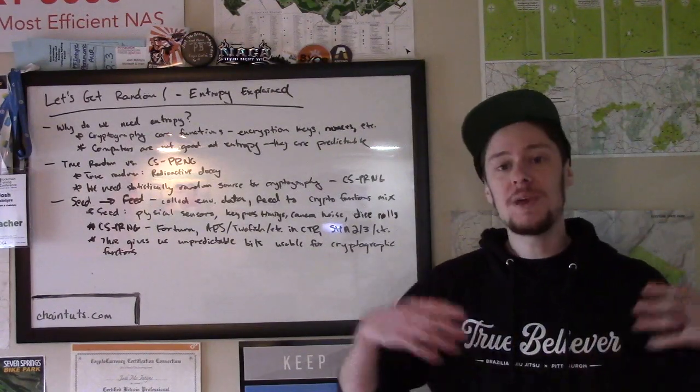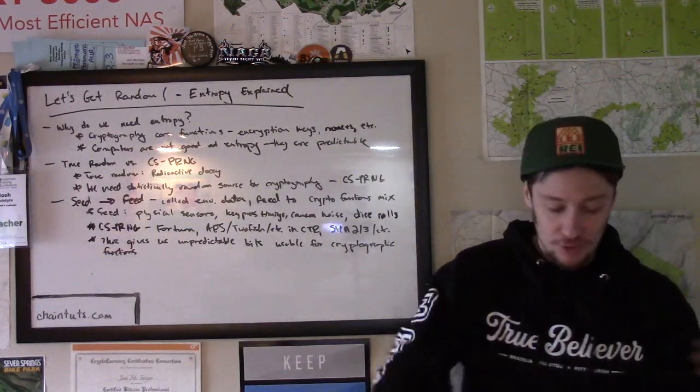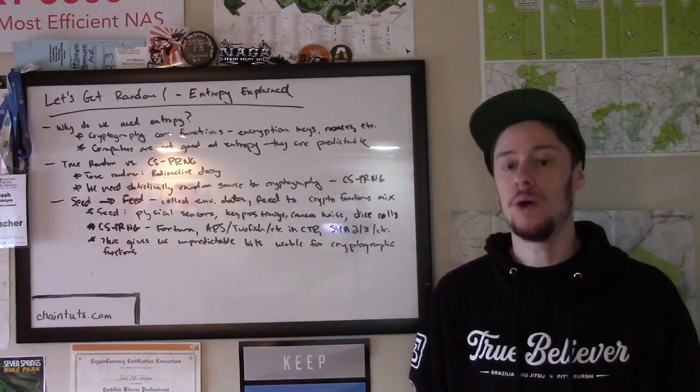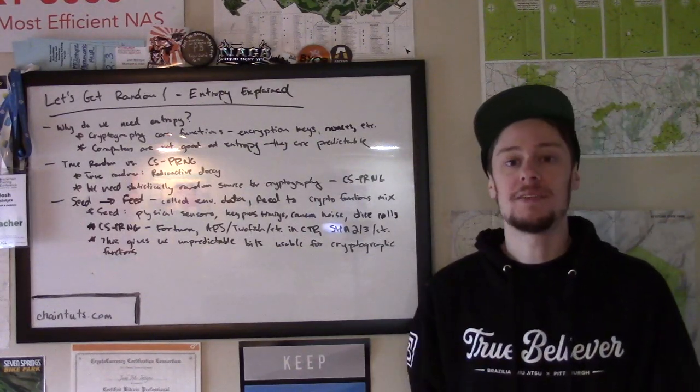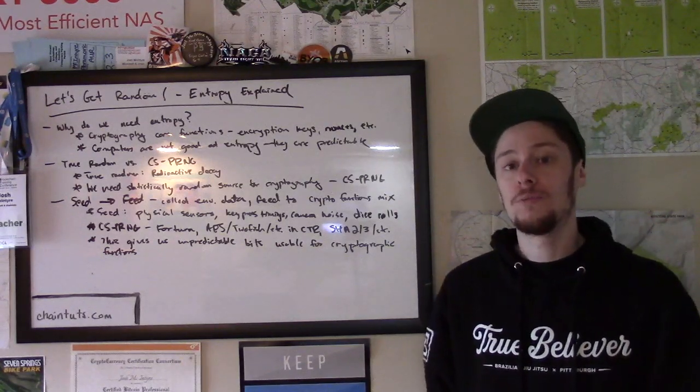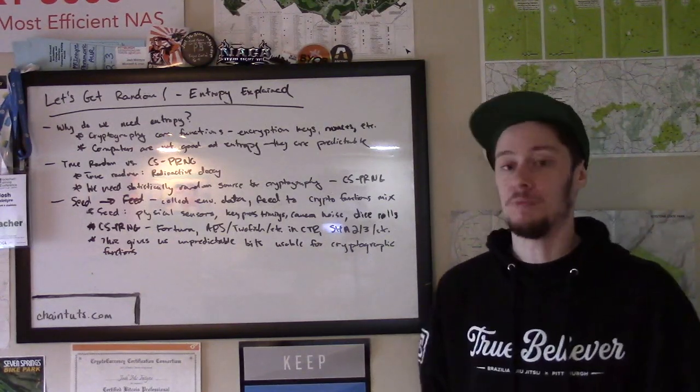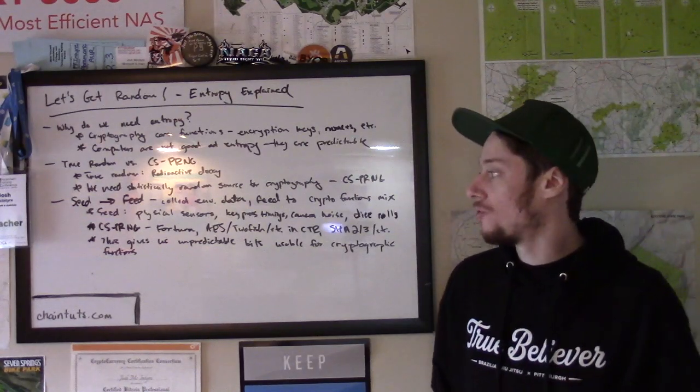Now, once we have this seed data and we keep refreshing this seed data with new information that we're collecting, how do we get usable bits out of it? Well, we use cryptographic functions such as block ciphers.